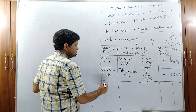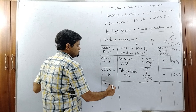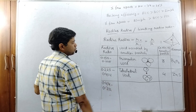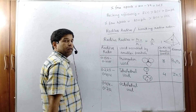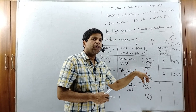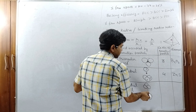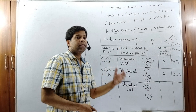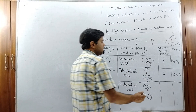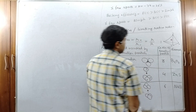When the radius ratio is 0.414 to 0.732, the void occupied by the smaller particle is the octahedral void. Three particles of layer one are surrounded by three particles of layer two, forming a vacant space called the octahedral void. It is surrounded by six particles — three down and three up — so the coordination number is six. An example is NaCl.